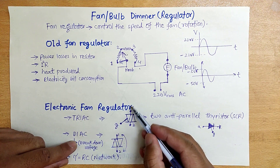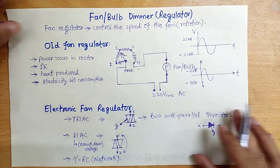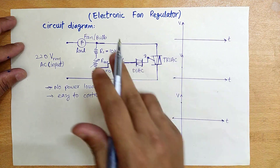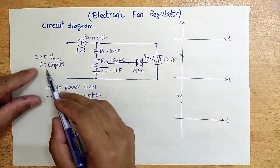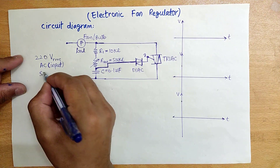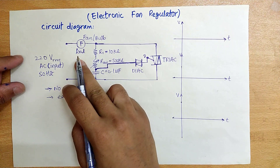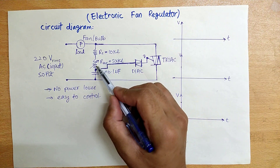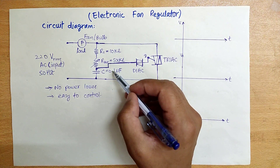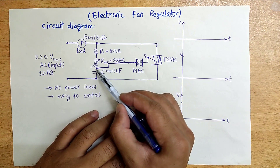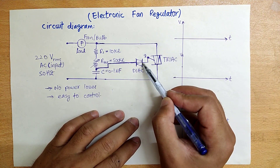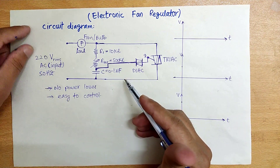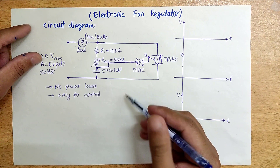If we give a pulse to the TRIAC gate, the current will flow through it. Now, coming to the electronic fan regulator circuit — how it works — we will also simulate the circuit in MATLAB and MultiSim. The electronic fan regulator circuit has a 220 volt, 50 Hz input; the fan or load is connected here; a fixed resistor of about 10 kilohms; a variable resistor of about 500 kilohms; and a capacitor of 0.1 microfarad.